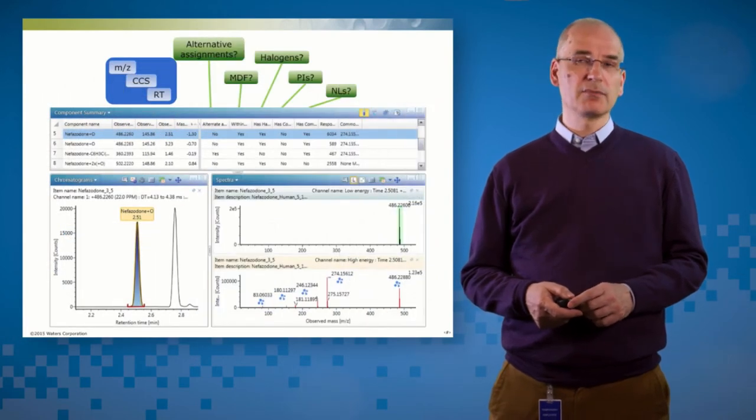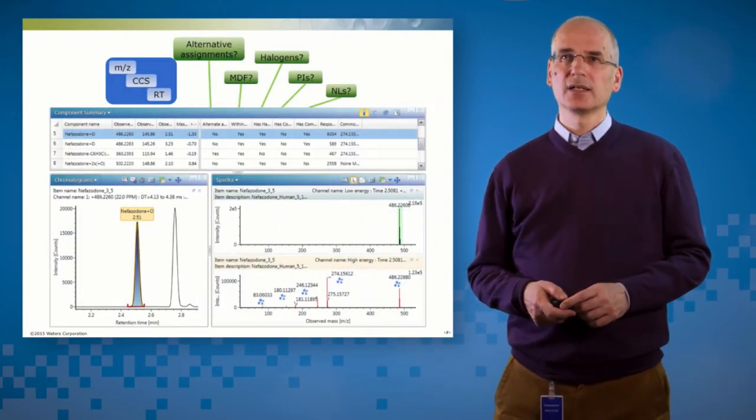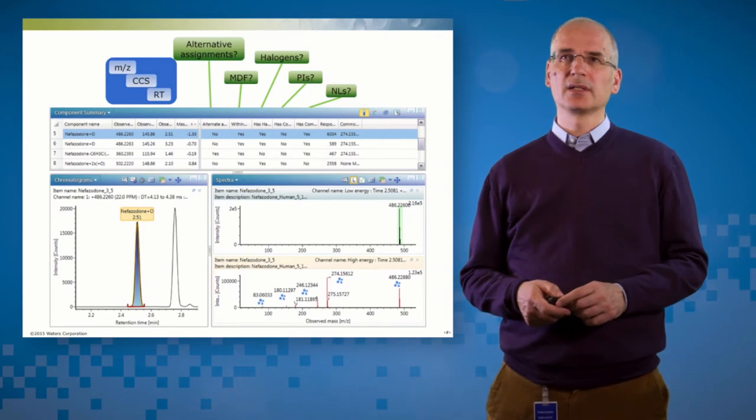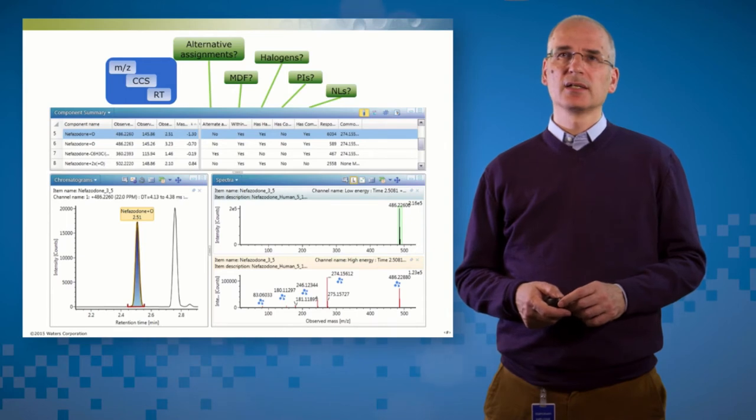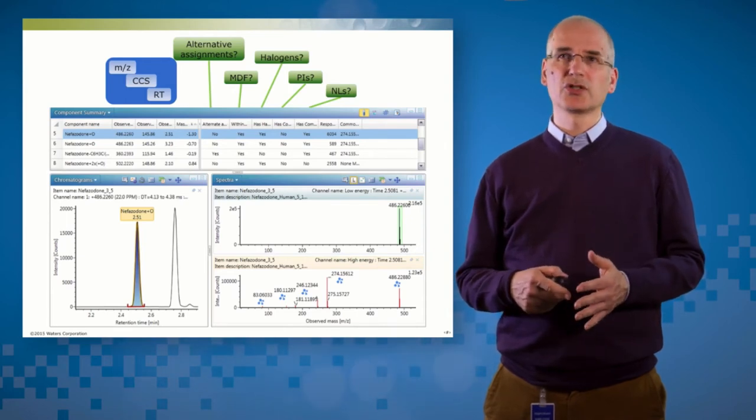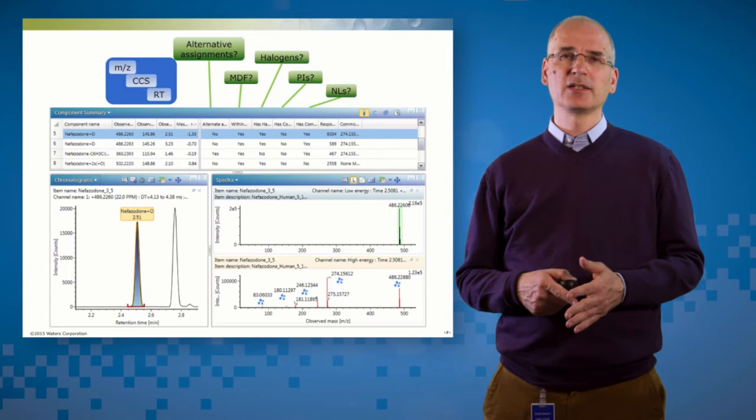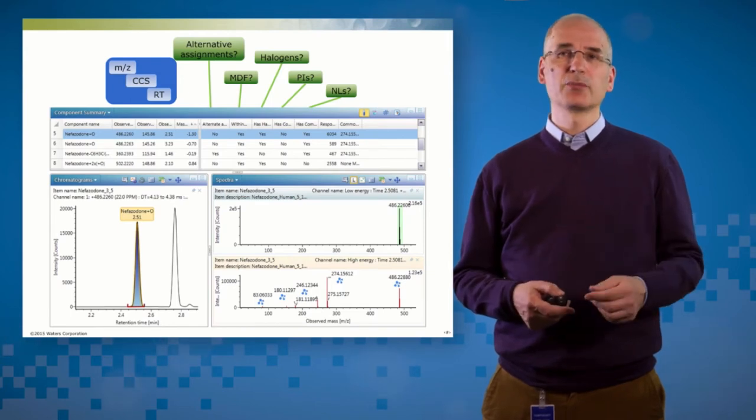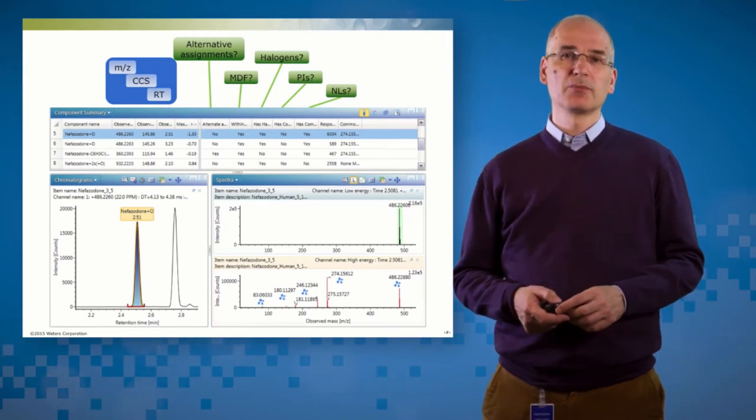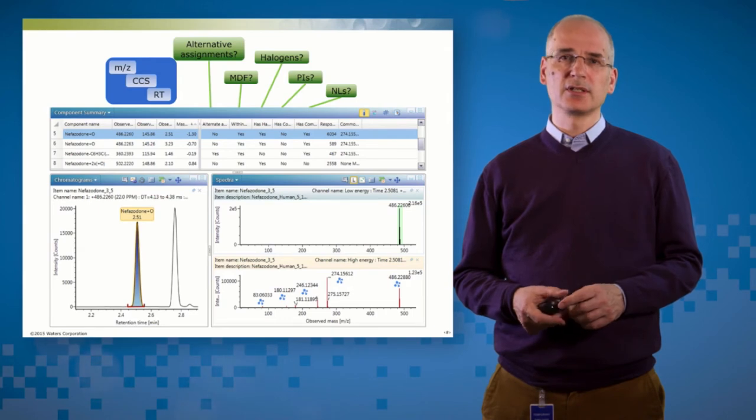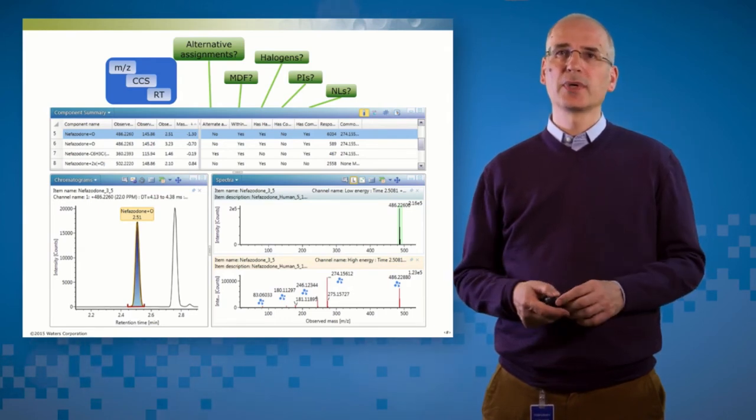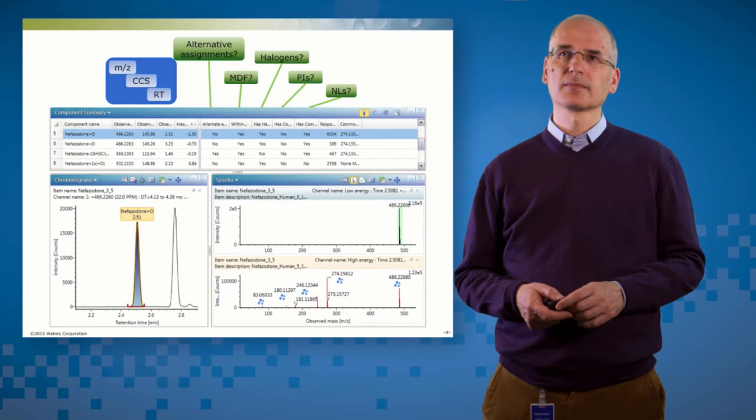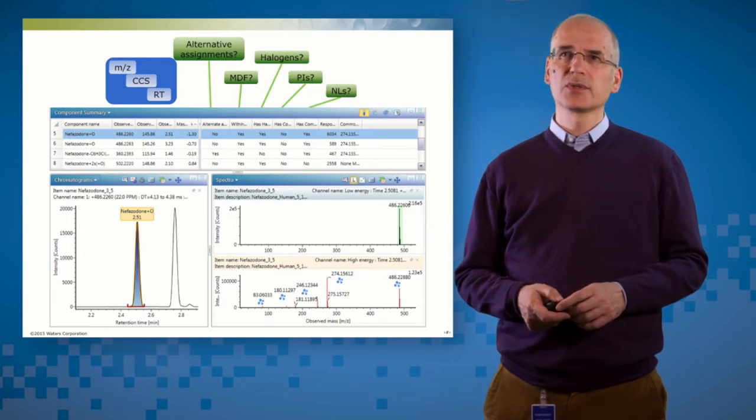So when I process the data using the method we've just created, I get this table and you can see the added value of having that information in there. The first thing is, normally we're going to get mass over charge and retention time. But on Vion and on Synapt, processed with Unify, you get an extra column. And that column is the collisional cross-section. It's there by default. The calibration is done up front. And that extra parameter that we can use to our advantage is up front and center, just as a natural part of any analysis that you have.